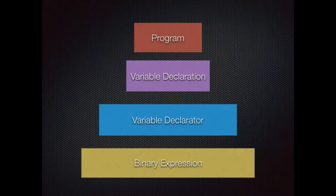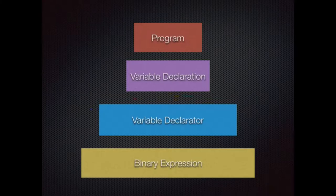I know what you're saying — that is not a tree, those are some blocks. But you can just imagine it kind of like a tree. This tree represents the code and has four different nodes: the program node, the variable declaration, the variable declarator, and the binary expression.